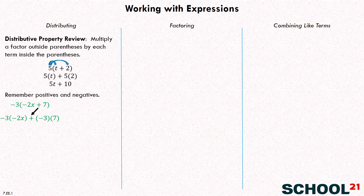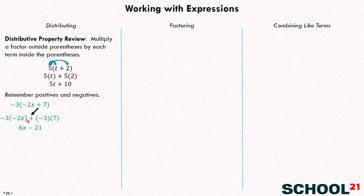So what's negative three times negative two X? A negative times a negative gives positive six X. And negative three times seven is negative 21. So what we have is really six X minus 21, because we have plus a negative 21, which is just like minus 21.